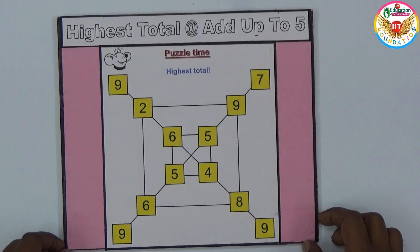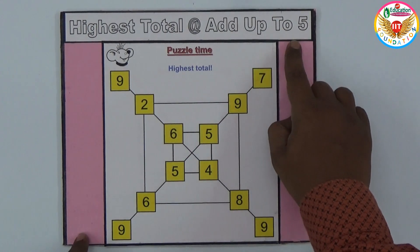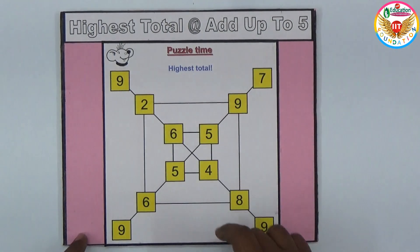In a tricky way you can ask students to solve this. The question is: we need to find the highest total by adding up to only five numbers that should be in straight line only by following these lines.